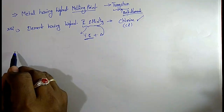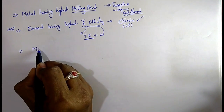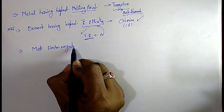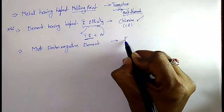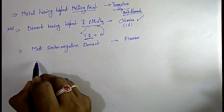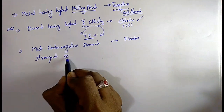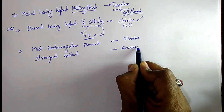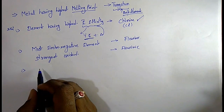The next one: most electronegative element. That is fluorine — very important. Fluorine is also the strongest oxidant. So fluorine is both the most electronegative element and the strongest oxidant.